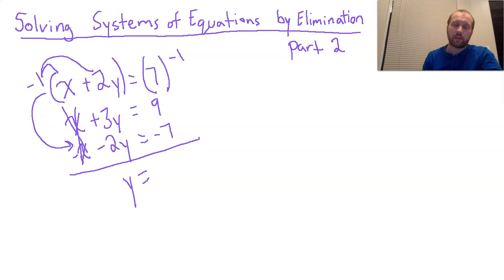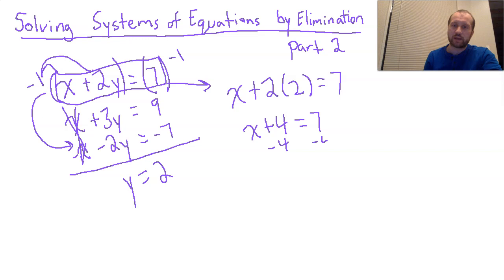Remember, I'm not done. I found what y is, but let's go back. We can go back to any version of these equations and plug in y equals 2 to find x. x plus 2y equals 7. If x plus 2 times 2 equals 7, that's the same as x plus 4 equals 7. Subtracting 4 from both sides, we get x equals 3.